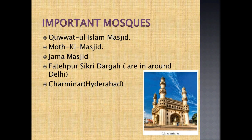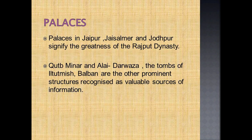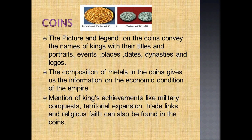Important mosques from the medieval period include Quwwat-ul-Islam Masjid, Moti Masjid, Jama Masjid, Fatehpur Sikri, and Charminar. Forts of historical importance include Agra Fort, Chittor Fort, Gwalior Fort, Delhi Red Fort, Daulatabad and Feroz Shah Kotla. Palaces in Jaipur, Jaisalmer and Jodhpur signify the greatness of the Rajput dynasty. Qutub Minar and the Alai Darwaza, and the tombs of Iltutmish, Balban and all the Mughal rulers are other predominant structures recognized as valuable sources of information. Hampi in South India remains a rich repository of medieval Indian history.